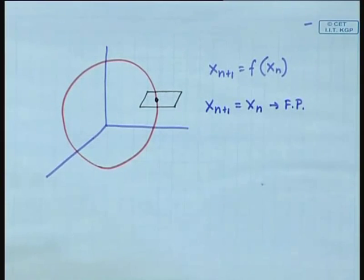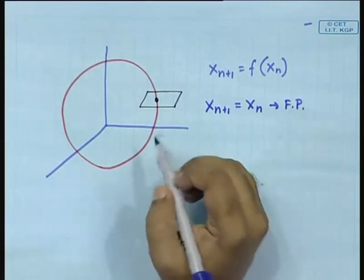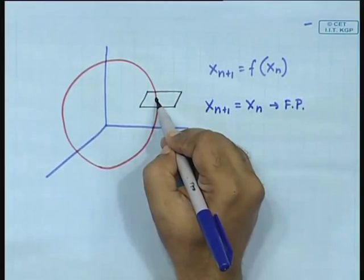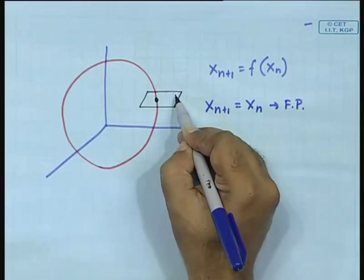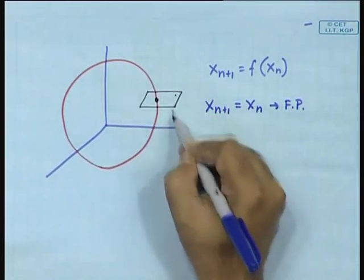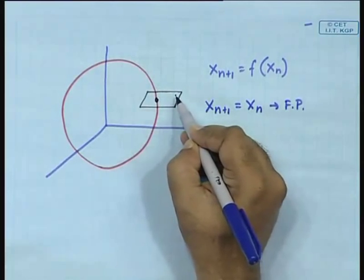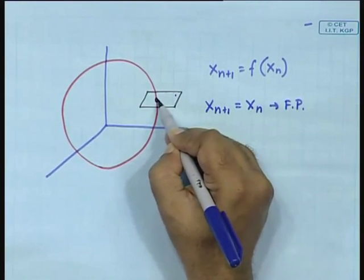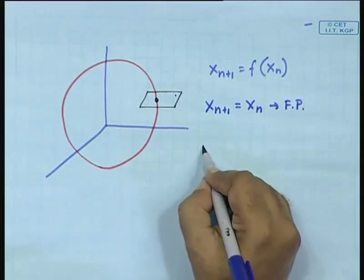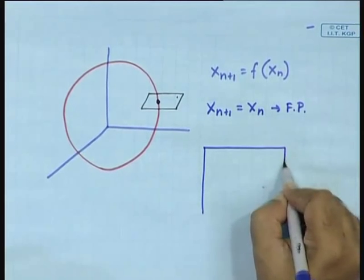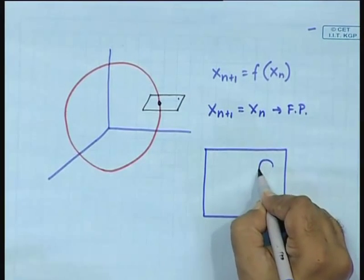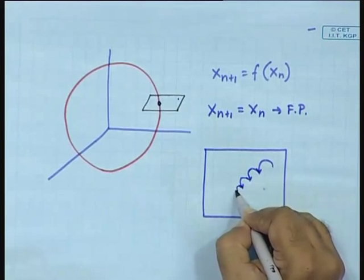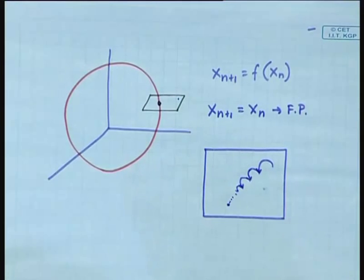Our ultimate question was how to study the stability of this orbit. If the orbit is stable, and you start from an initial condition away from it, then in successive iterations on the Poincaré plane it will come closer and closer to that fixed point. You will see a sequence of points mapping progressively closer to each other, ultimately converging onto that fixed point.